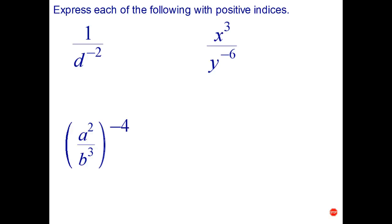Okay, for the first one, to raise a number or a variable to a negative power, we just rewrite it as the reciprocal to the positive power. The reciprocal of 1 over d to the negative 2 is d to the negative 2, but change it to the positive power, and that gives us d squared.